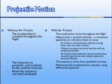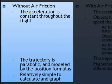Let's be a little bit more specific. In the examples that we've studied so far, without air friction, the acceleration is constant throughout the flight. It's always been negative 9.8 the whole time. That results in trajectories or paths that are perfect parabolas and can be modeled easily using the position formulas we've already done before. They're relatively simple to calculate and to create graphs of.